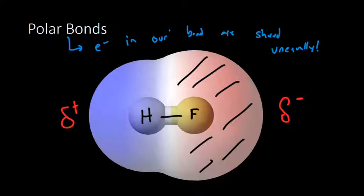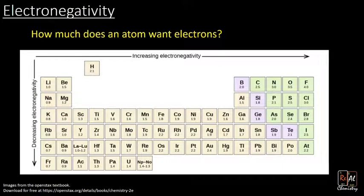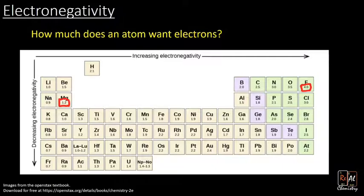Now, if your electronegativity difference is great enough, you can actually get to a full minus one and a full plus one. Electronegativity tells us how much an atom wants electrons, and we've quantified that with a number — every element has a number indicating how electronegative it is. For example, fluorine has a value of 4, making it the most electronegative element on the periodic table. Meanwhile, magnesium has a 1.2. We've organized all these values on a periodic table.